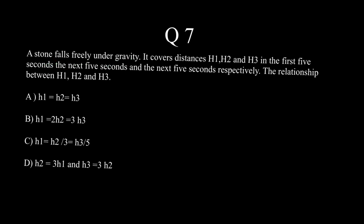A stone falls freely under gravity. It covers distances h1, h2, and h3 in the first 5 seconds, the next 5 seconds, and the next 5 seconds respectively. What is the relationship between h1, h2, and h3?